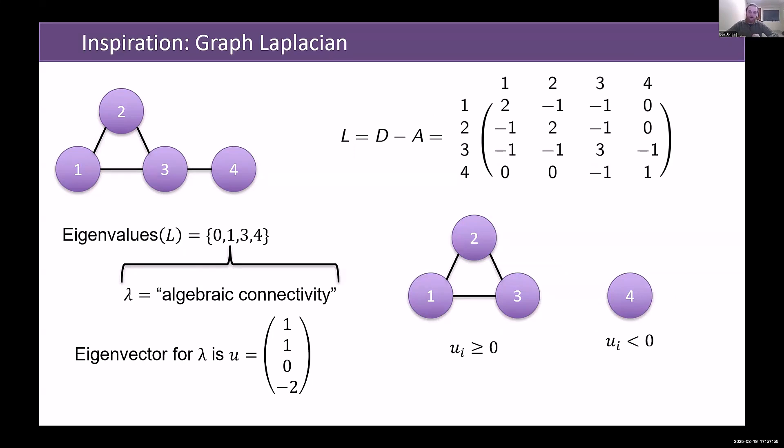This partitions our graph. In particular, it is called the mincut partition because we have removed the minimum number of edges to form a disconnected graph. And this eigenvalue itself tells us some lower bound on the connectivity of the graph, which is the number of edges we had to remove. So this is a really useful and interesting thing.